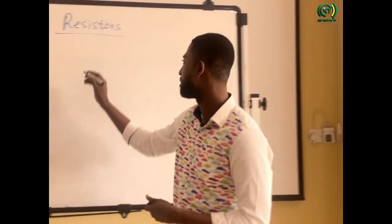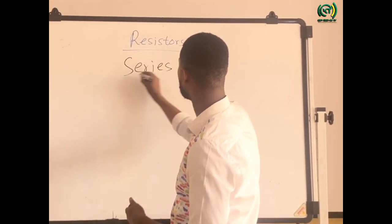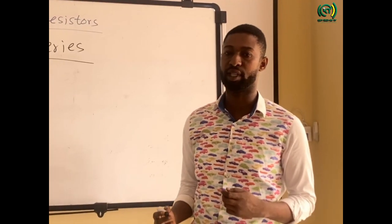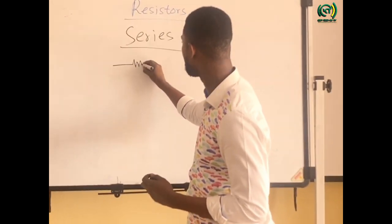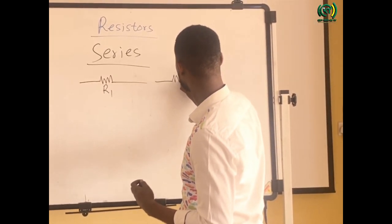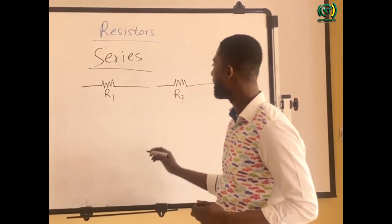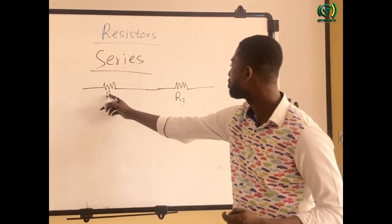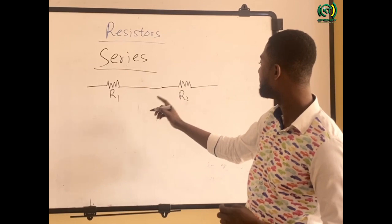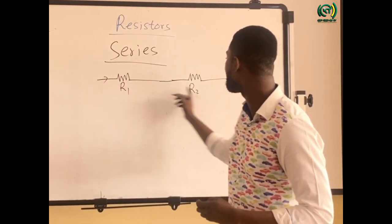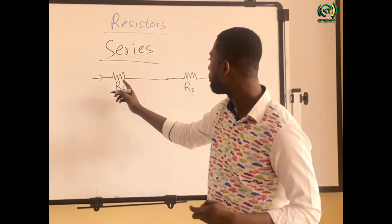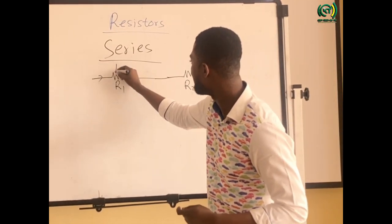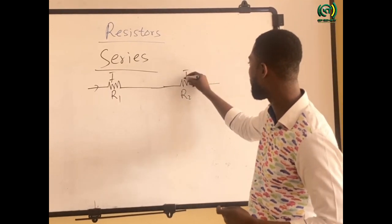Let's talk about series connection. With resistors, as I said, resistors are connected in series where the same current flows through them. So if I have resistors R1 and R2, and R1 is connected in series with R2, it means that these two resistors are connected in series. In this case, the current will flow through these resistors, and the current that flows through R1 is the same as the current that flows through R2. So the current through R1 is I, and the current through R2 is also I.